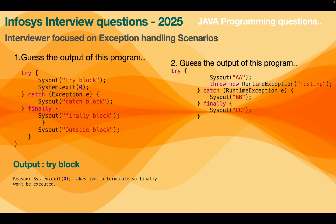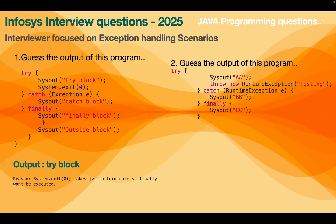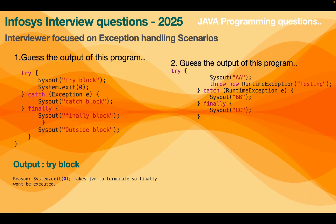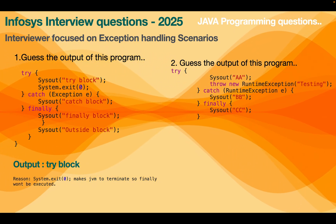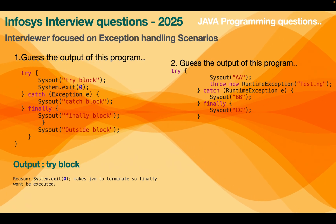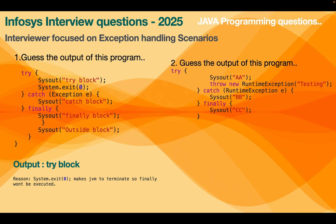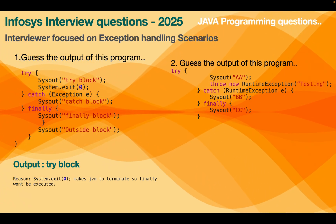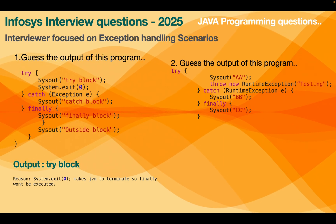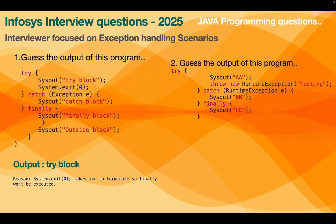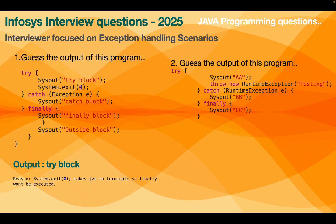None of the remaining lines will be executed. Some candidates answered try block and finally block, which is wrong, because after System.exit the JVM terminates the program. So only the try block will be printed in the output. Be careful with these kinds of questions.